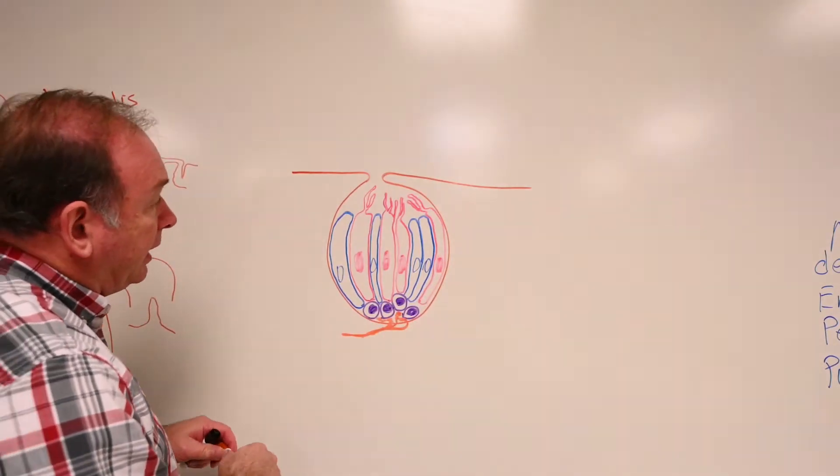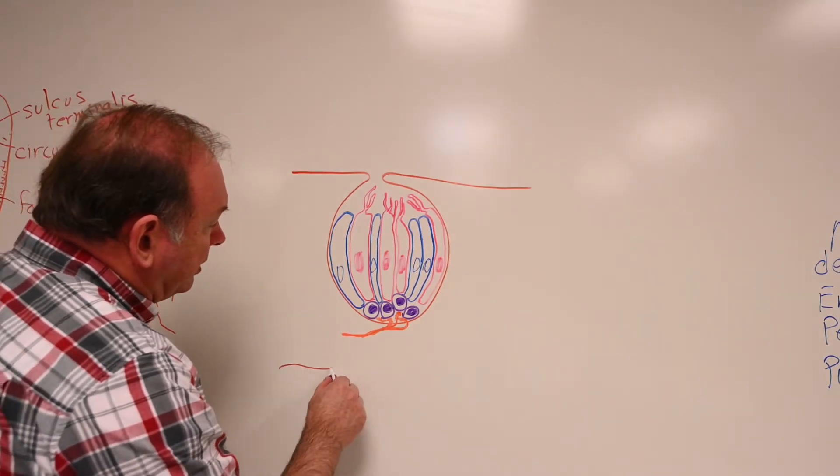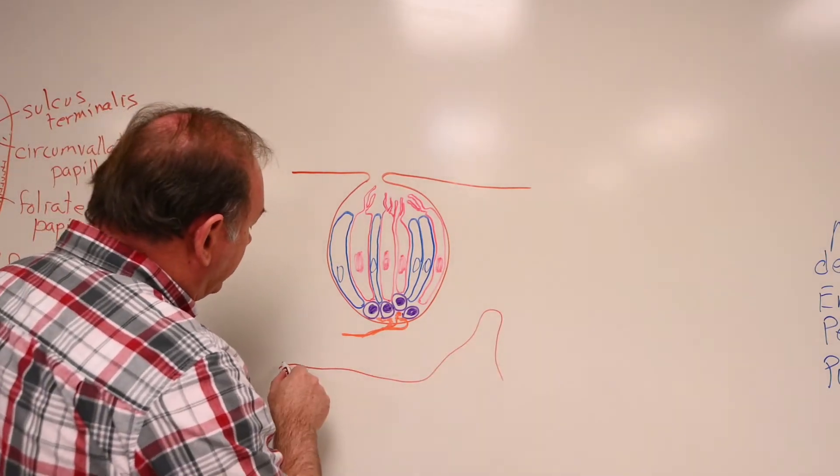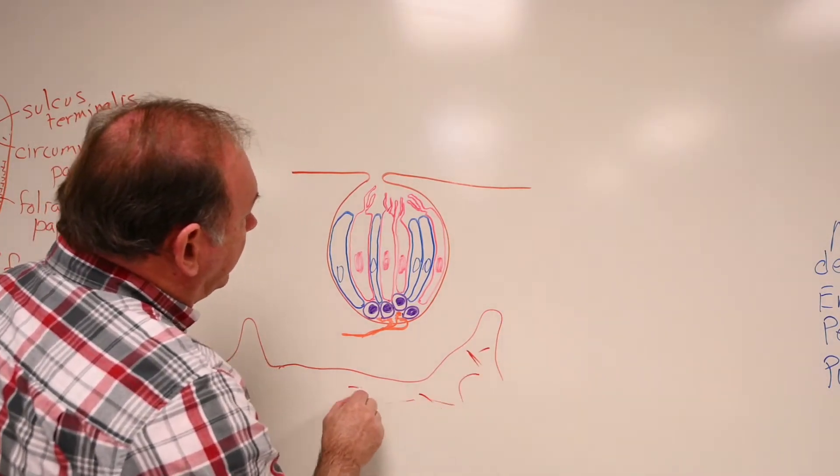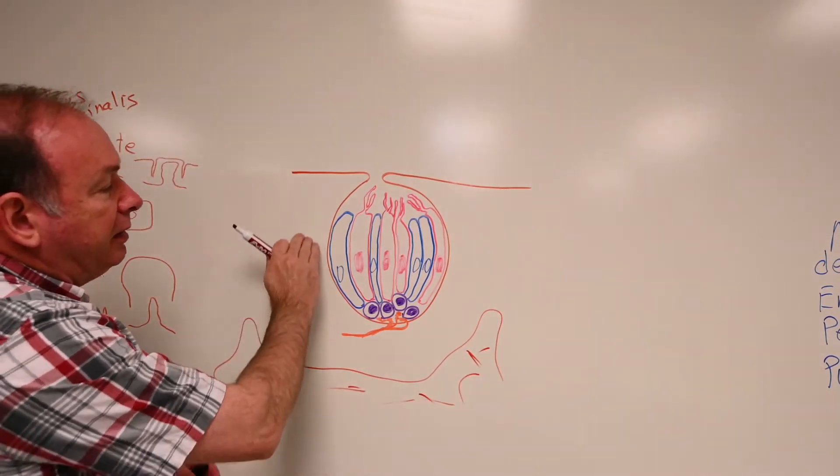They're embedded in the epithelial layer, so the epithelium would extend down through here, and there would be, like papillae, like structures of connective tissue down through here.